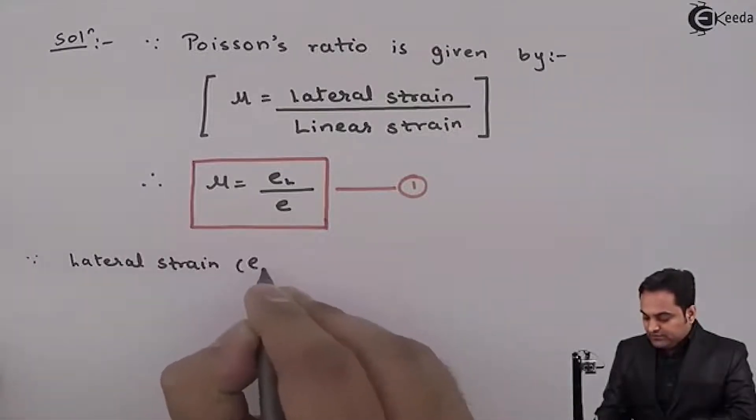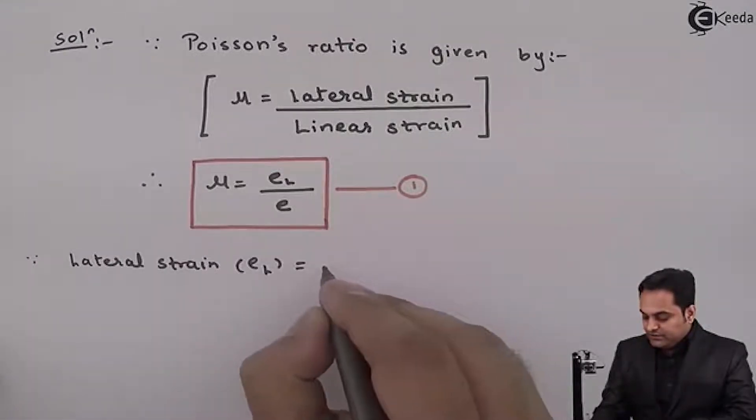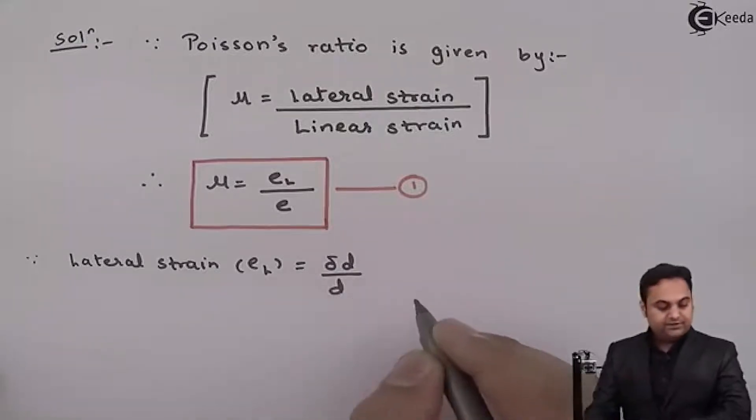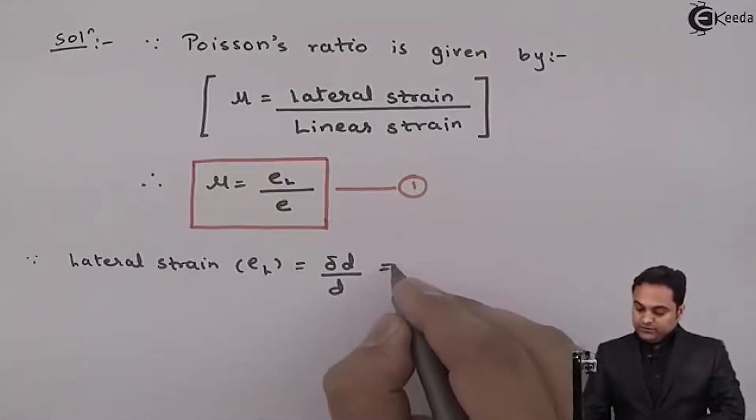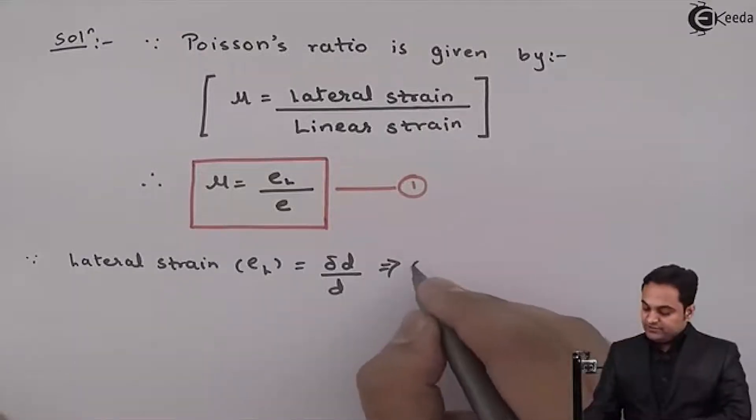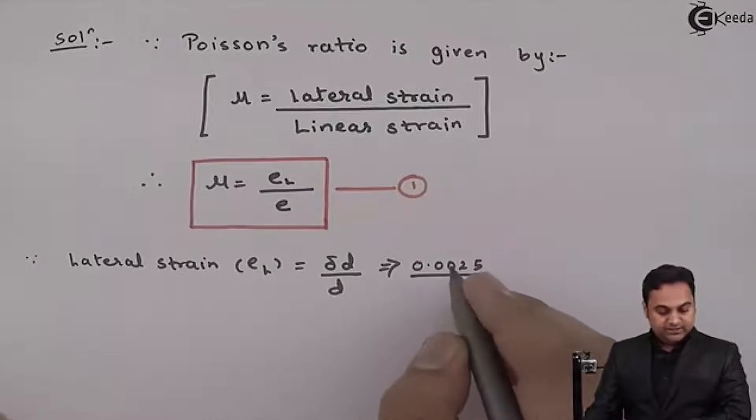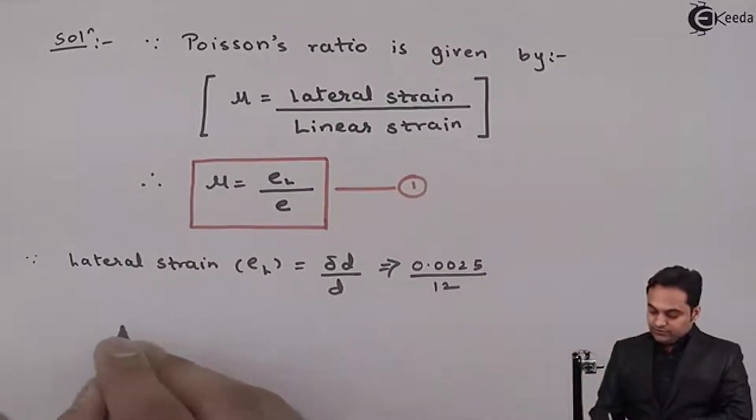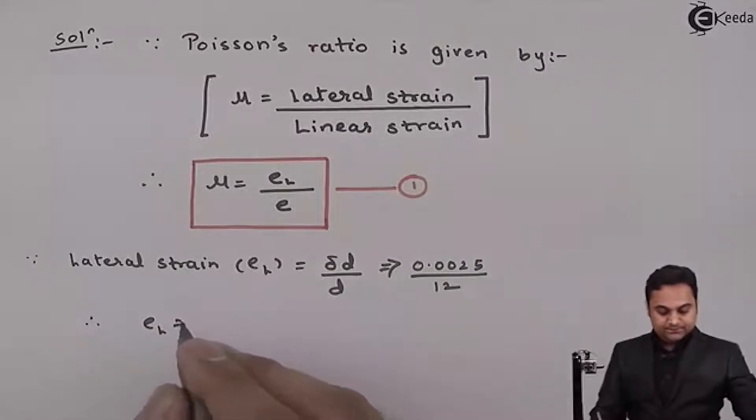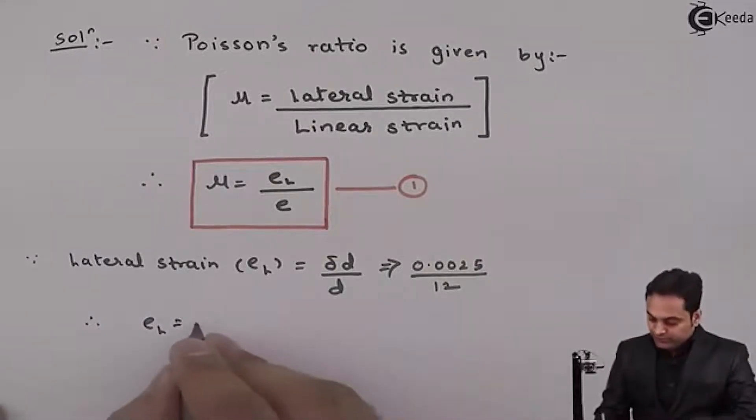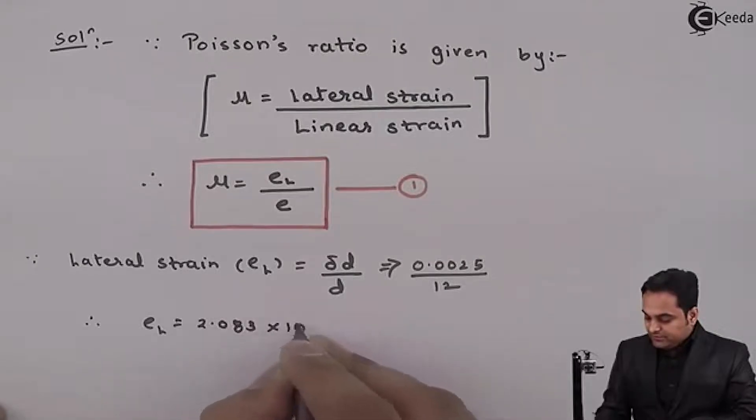Here the change in diameter is given as 0.0025 and original diameter is 12. So from this I'll first get the lateral strain and my answer is 2.083 into 10 raised to minus 4.